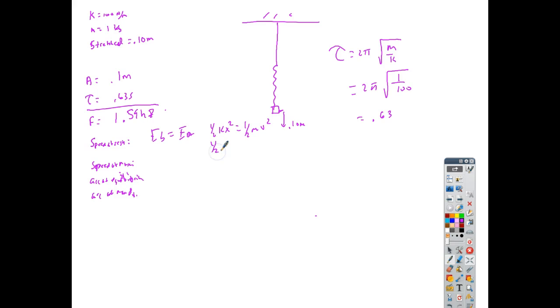So I get one-half k is 100. X is, what's the one place where I know it's not moving? At the top and at the bottom, the two places where it's going to stop and then change direction. So it has to not be moving there. So that would be when my amplitude is my maximum. So that's going to be 0.1 squared equals one-half, mass is 1, velocity I've got to solve for. Put that in my calculator, I get velocity is 1 meter per second.